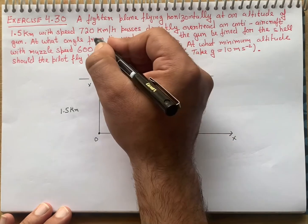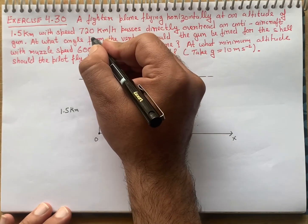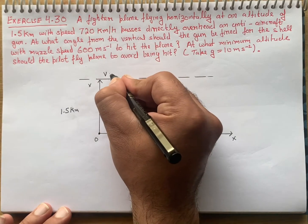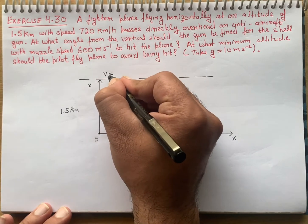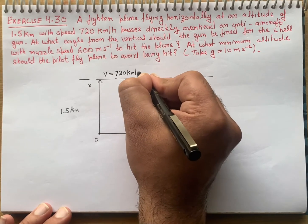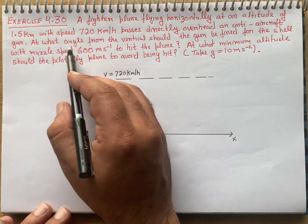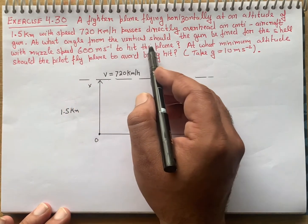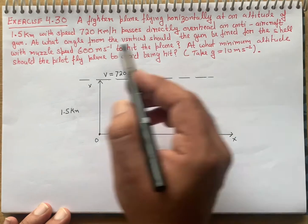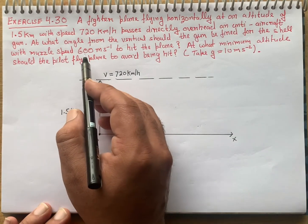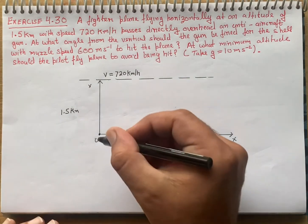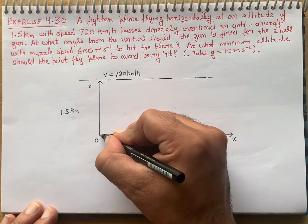What is the velocity of the fighter plane? We have been given the velocity of the fighter plane — 720 km per hour. At what angle from the vertical should the gun be fired for the shell with muzzle speed of 600 meter per second to hit the plane? That is what we have been asked.